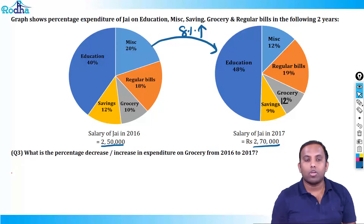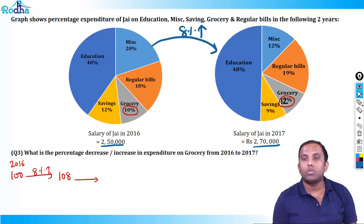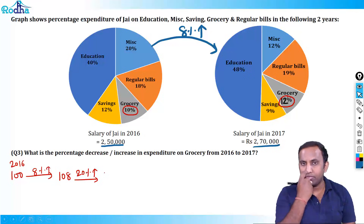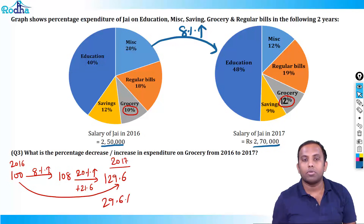Grocery again — assume 100 from 2016. Pie chart had an 8% increase so if grocery was constant, grocery would become 108. But grocery itself increased from 10% to 12%. What is the percentage increase? 2 on 10 = 20%. So 20% further increase. 20% of 108 is 21.6. So 108 + 21.6 = 129.6. From 100 to 129.6 — that is 29.6% increase in grocery.